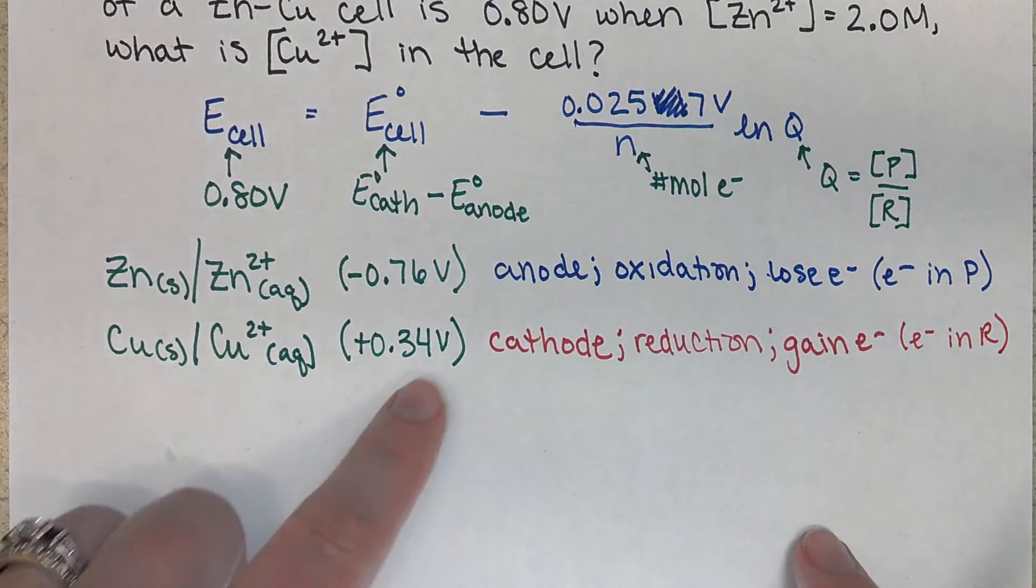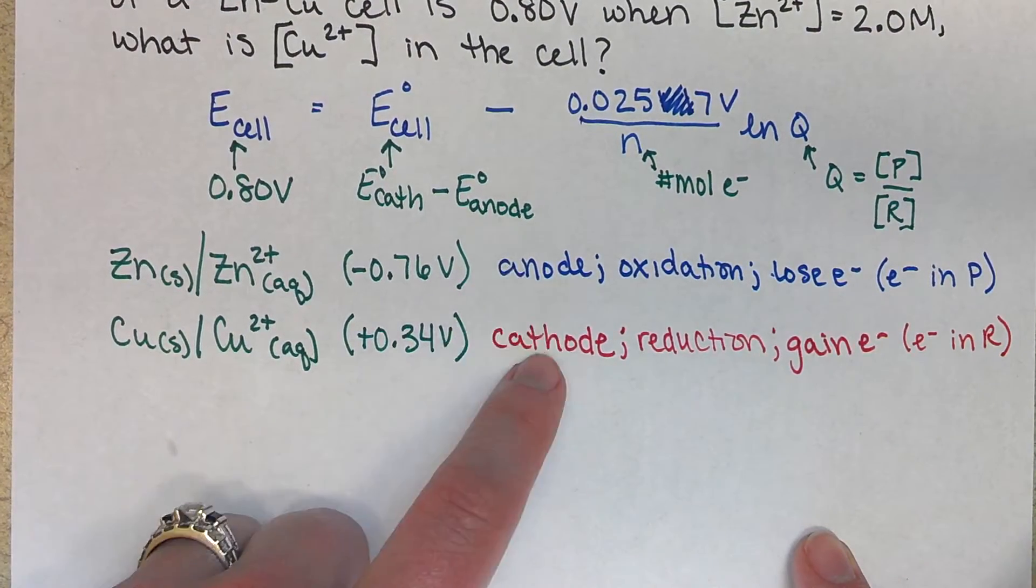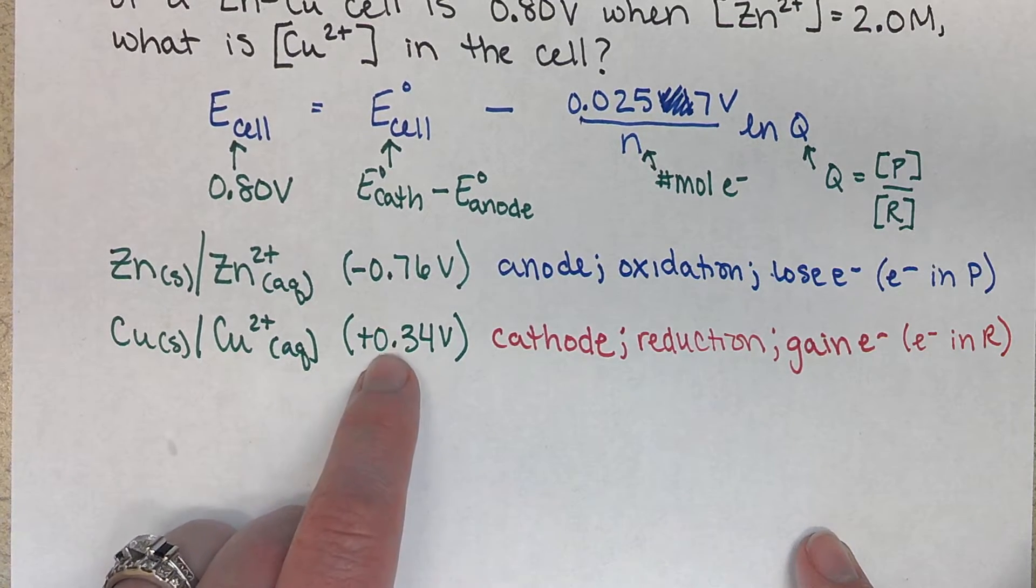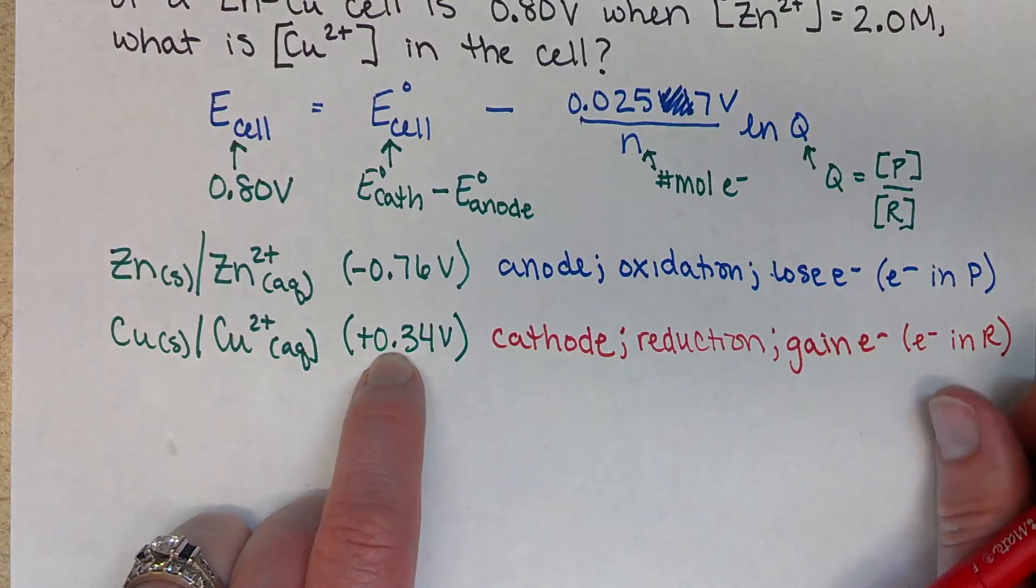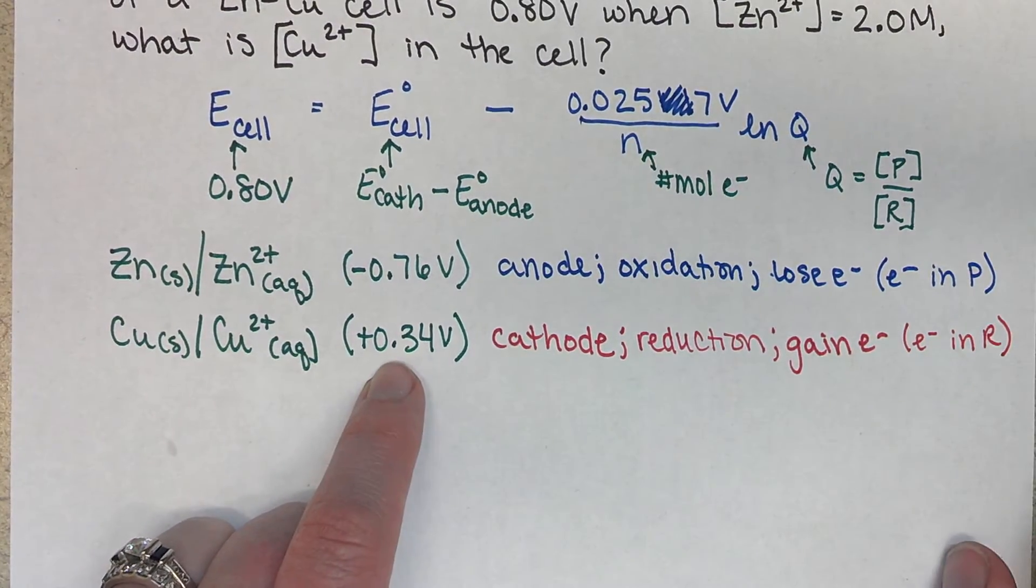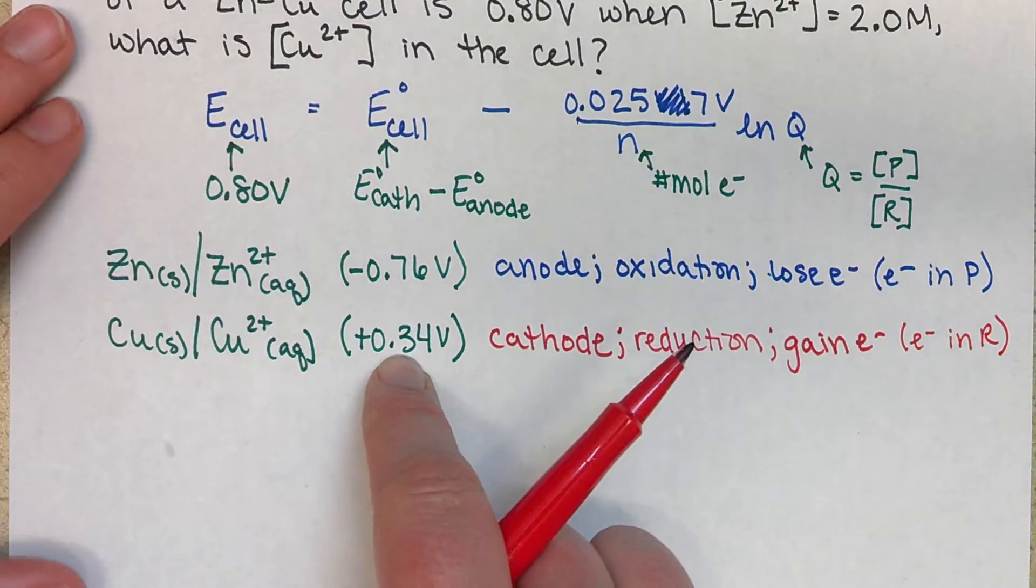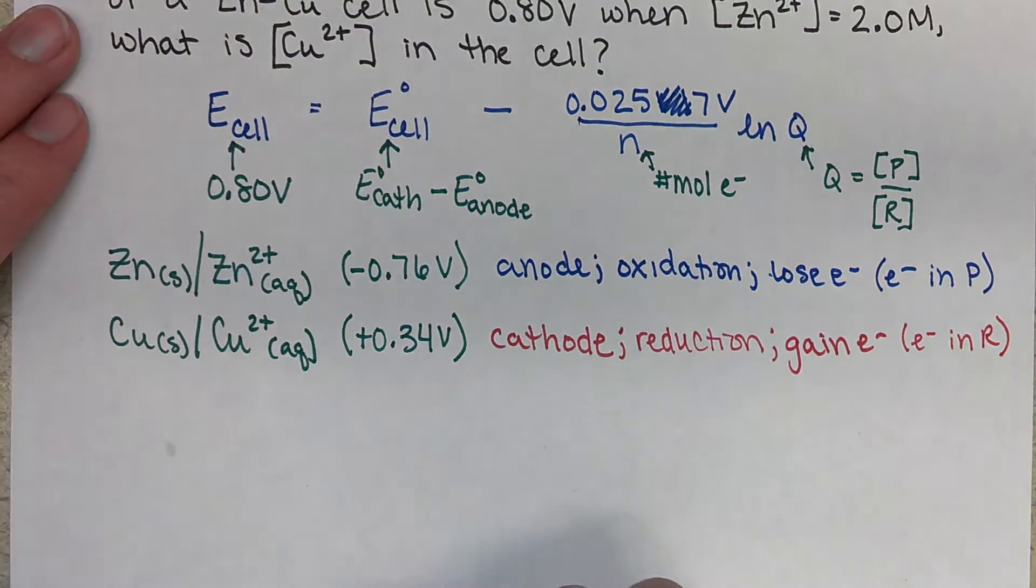All right. So we have established what's our cathode and our anode by looking at our standard reduction potentials. Whatever came first in the table or is the highest positive value. It could have a negative value, but basically whatever's the largest value is going to be our cathode for a spontaneous cell.